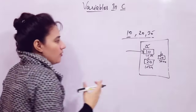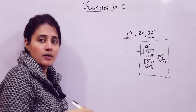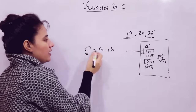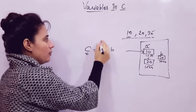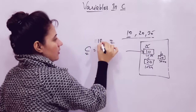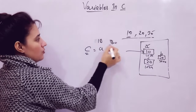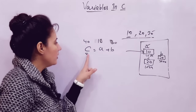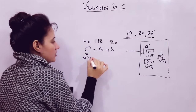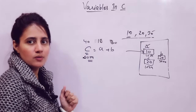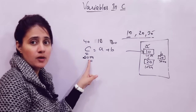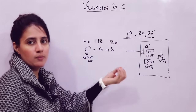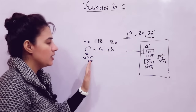The name of a variable we can declare as anything like A, B, C or anything. But suppose I want to print the sum of two numbers — A plus B. Rather than writing C here, programmers write a meaningful name. Like if I write 'sum' here, that would be more meaningful. Just by seeing the name of this variable, you can easily figure out that this variable is containing the sum of numbers. So it is better to use a meaningful variable name.